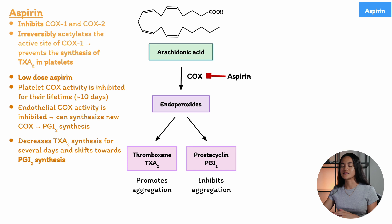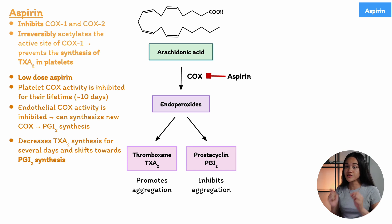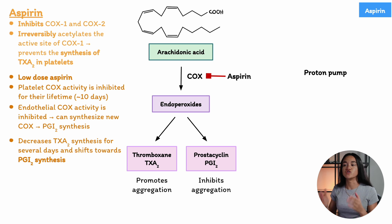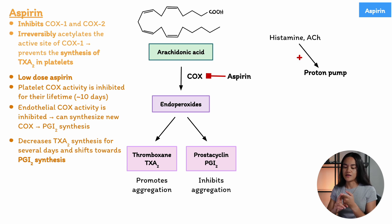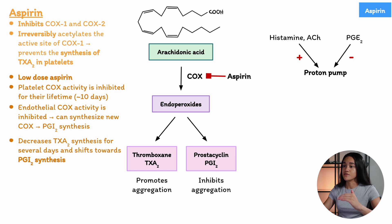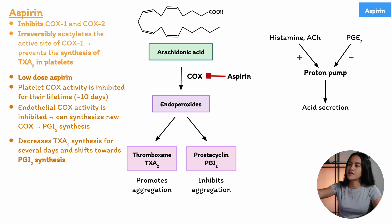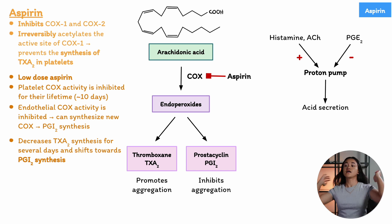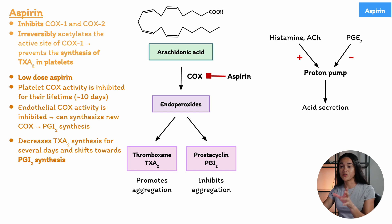Moving on to side effects — one of the most common side effects of drugs like aspirin is damage to the gastrointestinal tract. This occurs because the proton pump, which is responsible for acid secretion in the GI tract, is regulated by prostaglandins produced in the gastric mucosa as a result of cyclooxygenase activity. The proton pump is activated by mediators such as histamine and acetylcholine, while prostaglandins help reduce its activity. By decreasing proton pump activity, prostaglandins lower acid secretion. These prostaglandins also promote the production of mucus that lines the GI tract, protecting the stomach lining from the harmful effects of stomach acid.